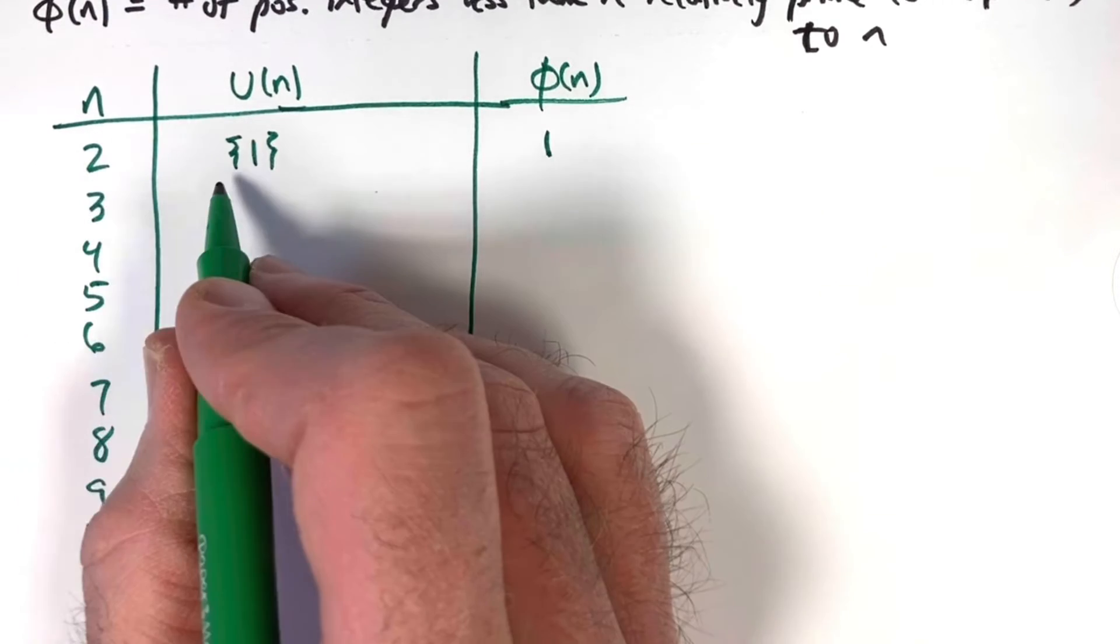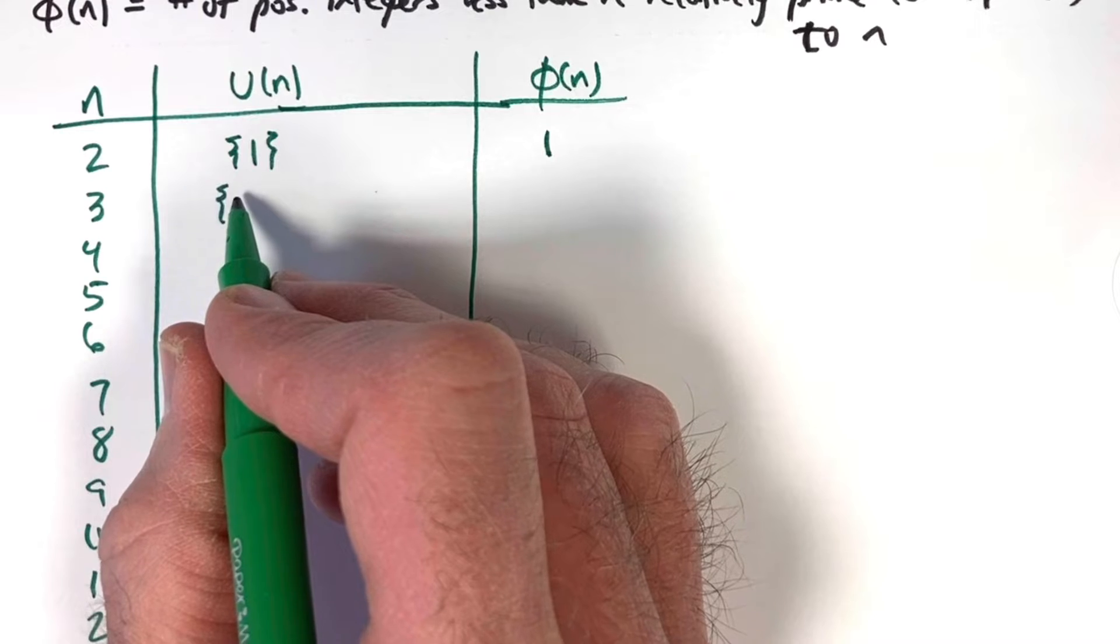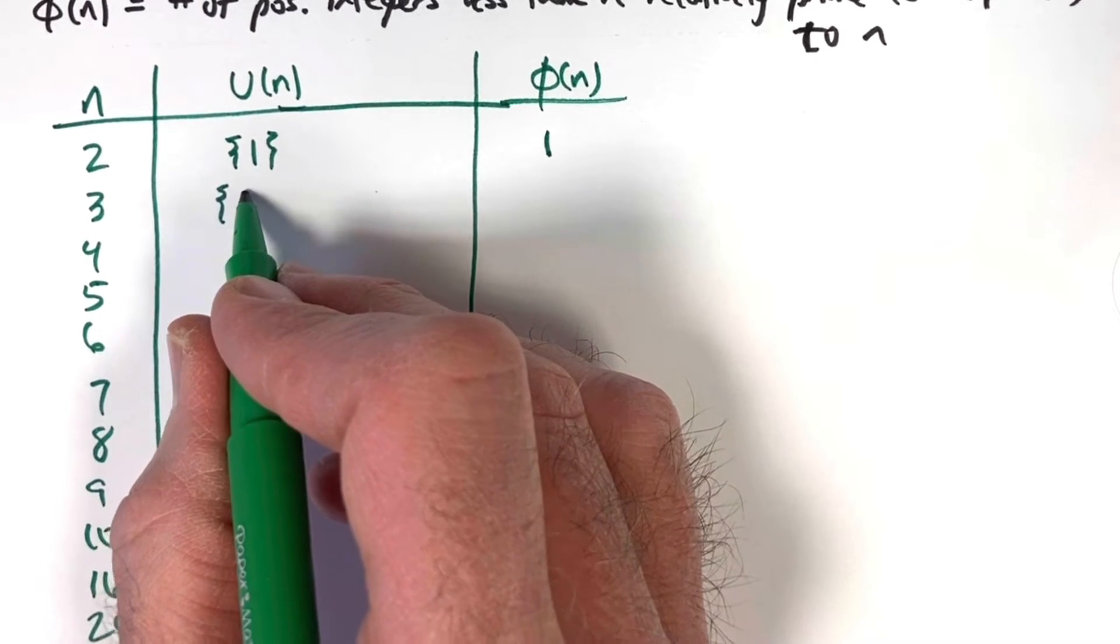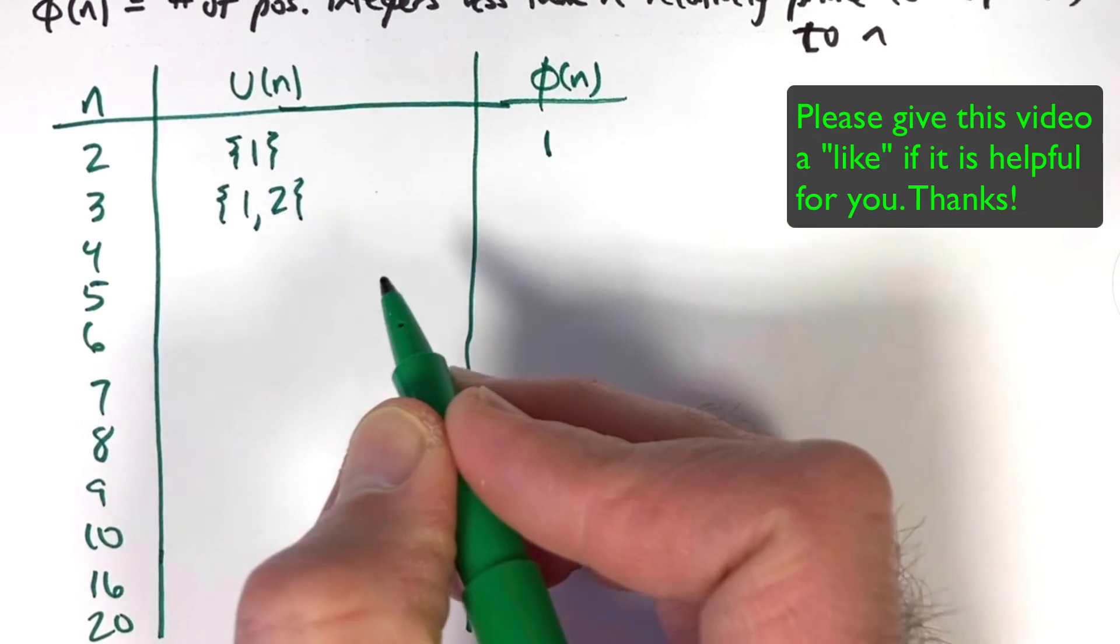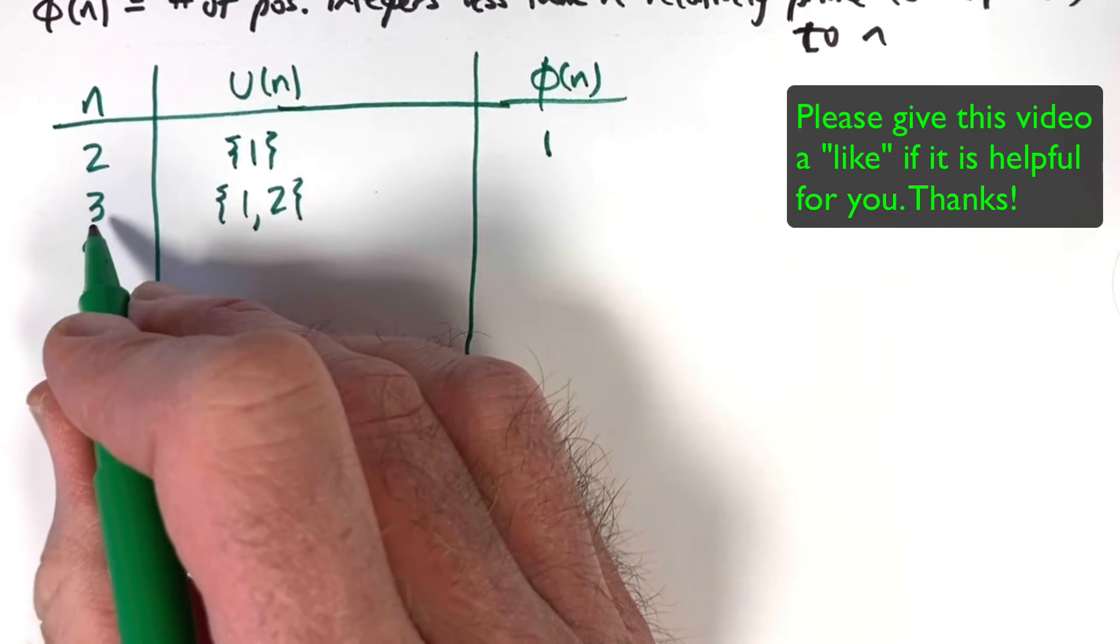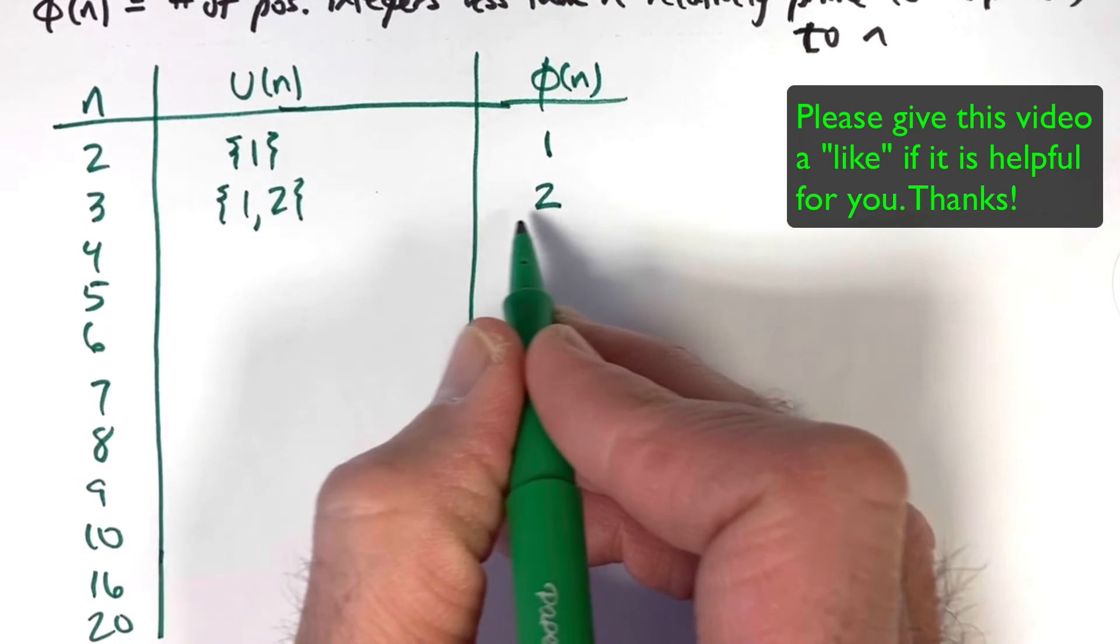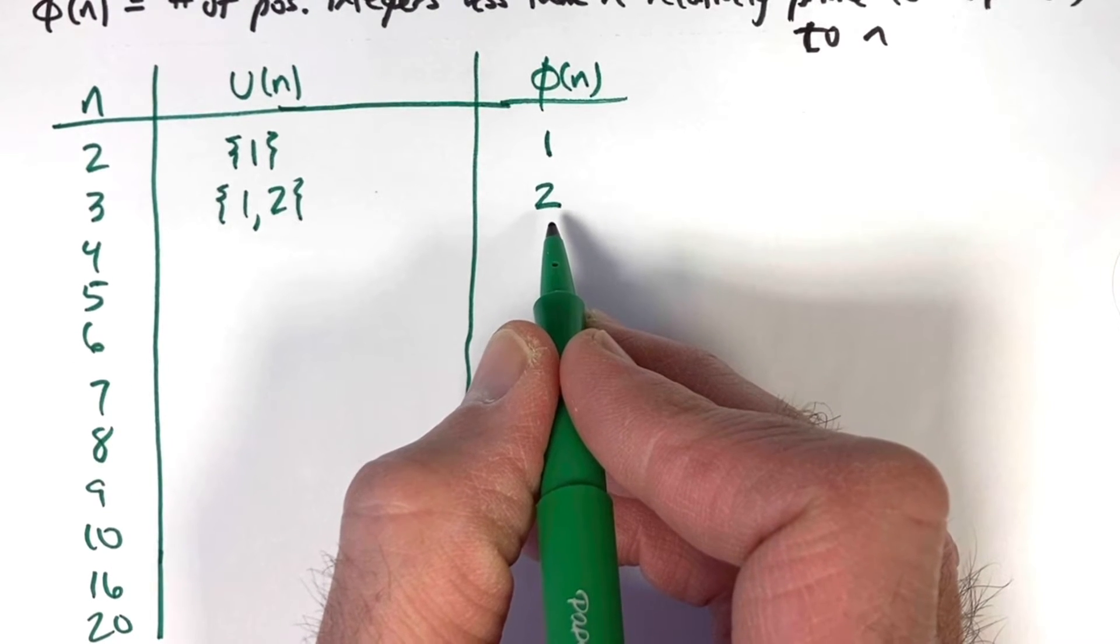When n = 3, what are the positive integers less than 3 that are relatively prime to 3, that do not have 3 as a prime factor? 1 and 2. How many elements are in that set? Two. So φ(3) = 2. It is a coincidence that the 2 here and the 2 there match. That won't always happen.